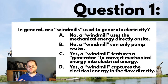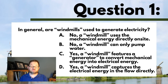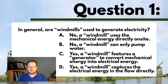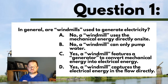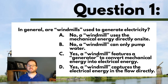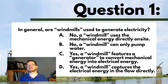Question one: In general, are windmills used to generate electricity? A. No, a windmill uses the mechanical energy directly on site. B. No, a windmill can only pump water. C. Yes, a windmill features a generator to convert mechanical energy into electrical energy. Or D. Yes, a windmill captures the electrical energy from the flow directly. Make a choice from those four options and get a little feedback before you move on to question two for this lecture.